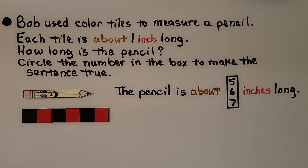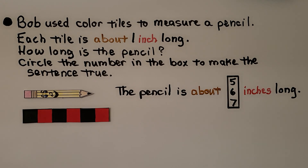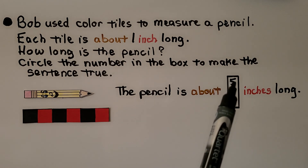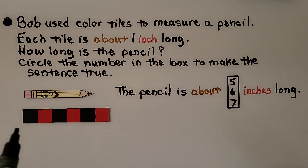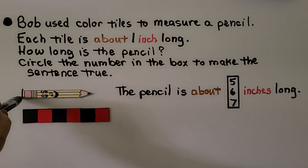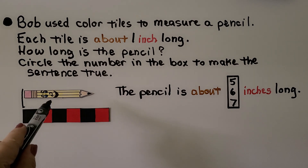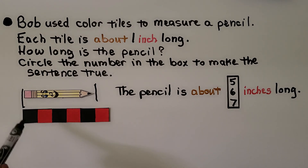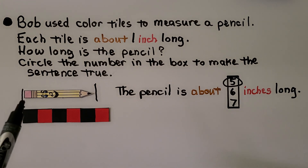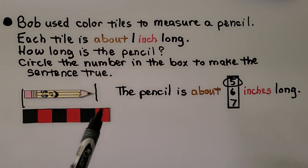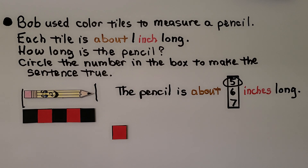Bob used color tiles to measure a pencil. Each tile is about one inch. How long is the pencil? We circle the correct answer: is it about five inches, six inches, or seven inches? We count how many tiles the pencil spans — the pencil starts here at the end of the boxes and ends here: one, two, three, four, five. The correct answer is five. Remember, line up the beginning and end with the color tiles — there's an extra tile that we didn't need. It's about five inches.